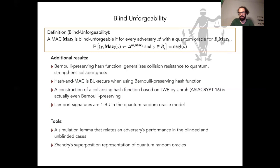Both for the proof of Boneh-Zhandry security of the separation example, as well as for the implication that blind unforgeability implies Boneh-Zhandry unforgeability, and for the security proof of the Lamport signature scheme, we all employ the superposition representation of random oracles.